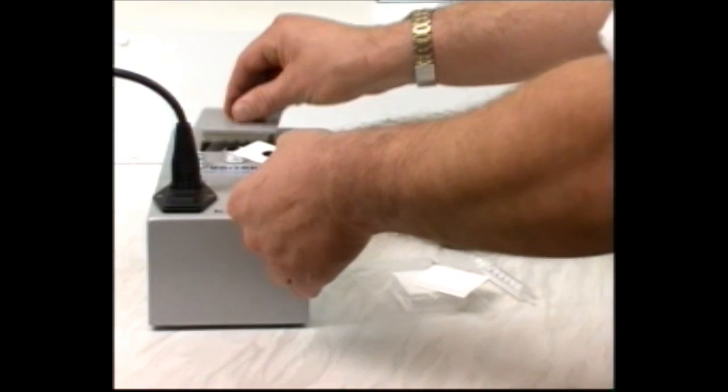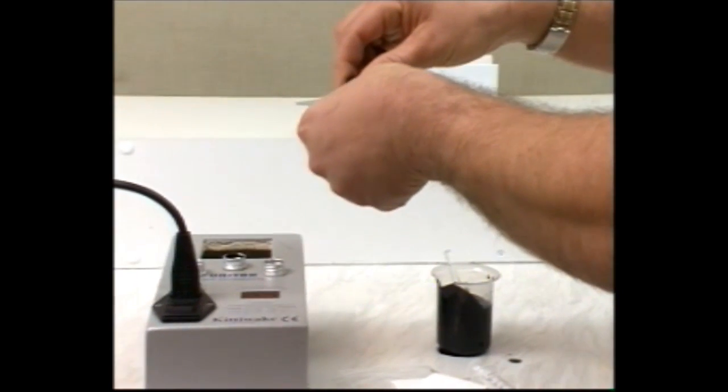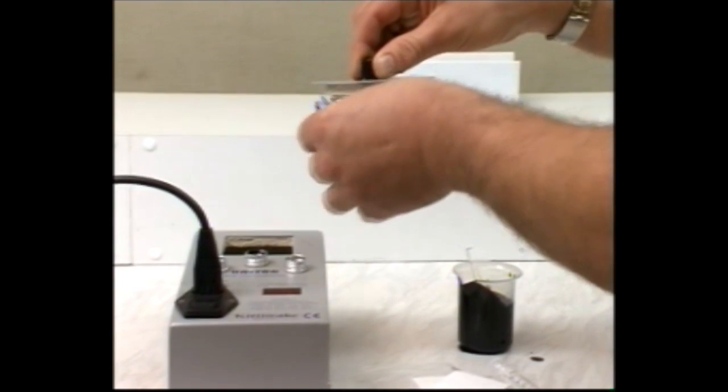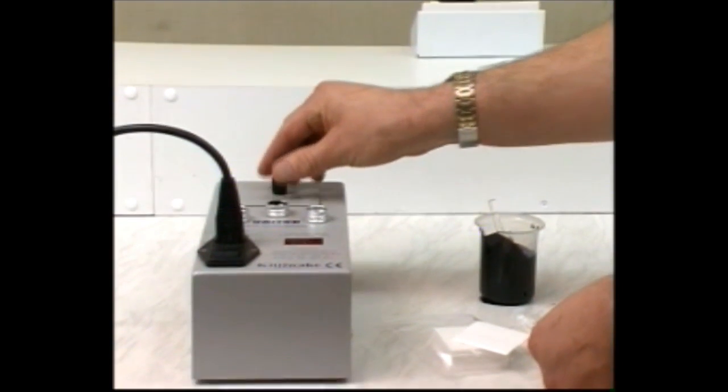Place the paper in the removable tray section and replace it in the oven. Reset the timer and wait for another 20 minutes while the spot dries and develops.